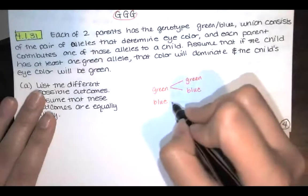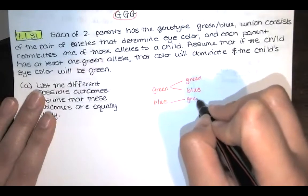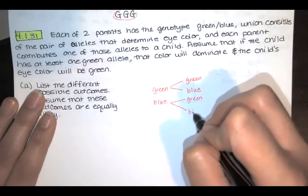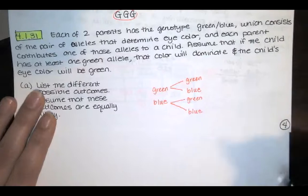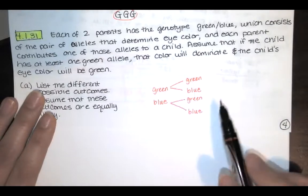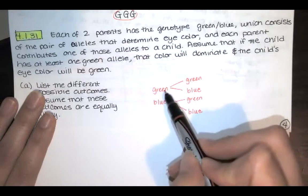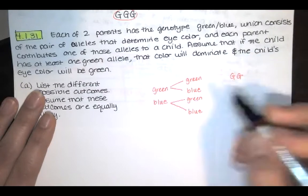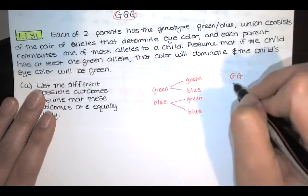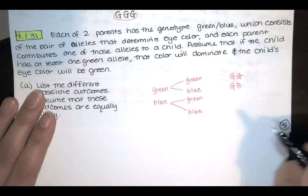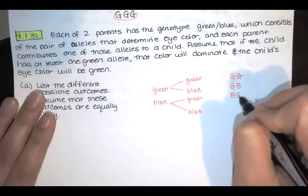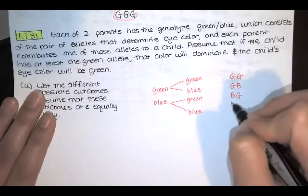Or the child could get blue from mom and green from dad, or the child could get blue from mom and blue from dad. So if we want the entire sample space, we just kind of look at this chart. We could have green and then green, so green from both parents. You could get green from mom and blue from dad. We could have blue then green, blue from mom, green from dad.